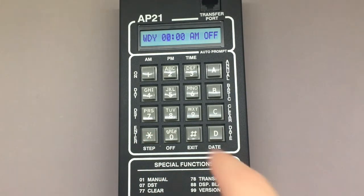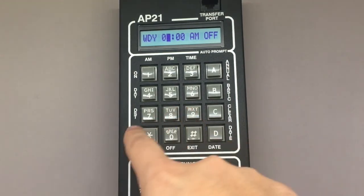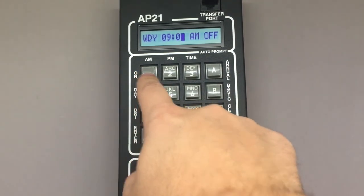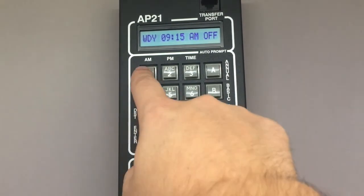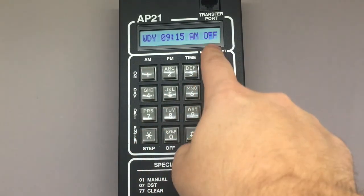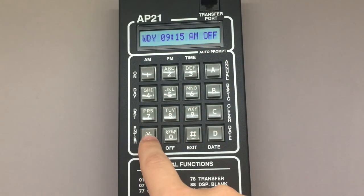I'm going to press 09 star, 15 star, 1 for a.m., star, and since I want the flashers to turn off, I'm just going to leave this designator alone and press star.